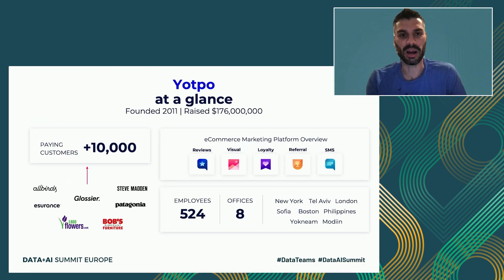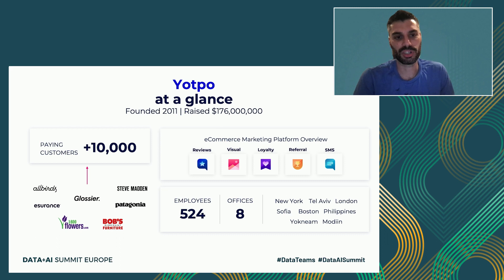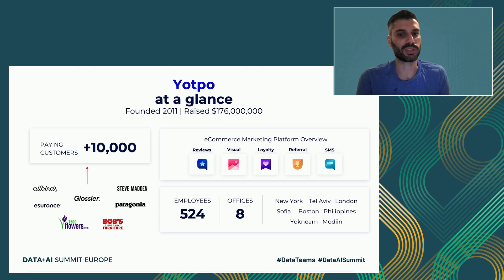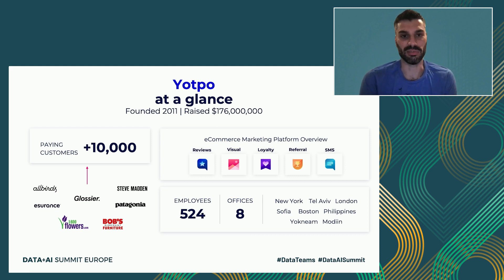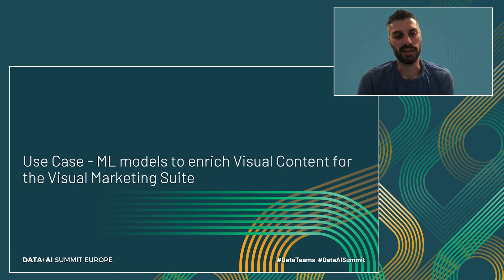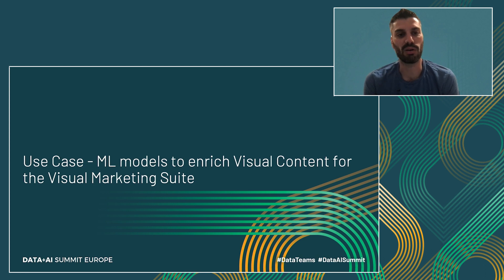A little bit about who we are. Yoppo is a company founded back in 2011 and is based in Israel. Our mission is to help e-commerce brands all over the world create a better and more seamless consumer experience by offering a one-stop-shop e-commerce marketing platform. The actual use case we're going to focus on is deploying image processing models and utilizing them as REST APIs for our visual marketing product.